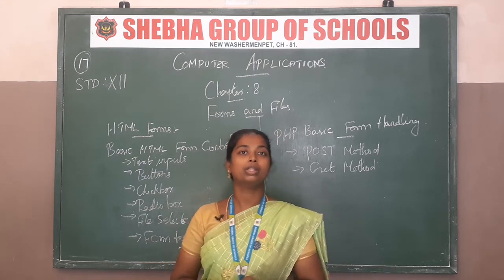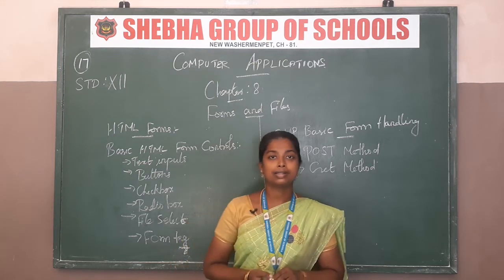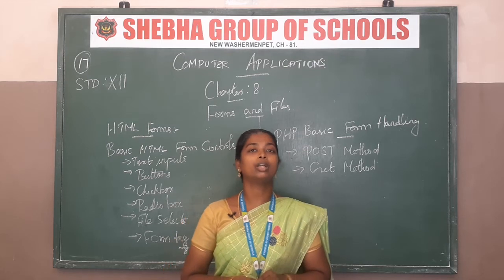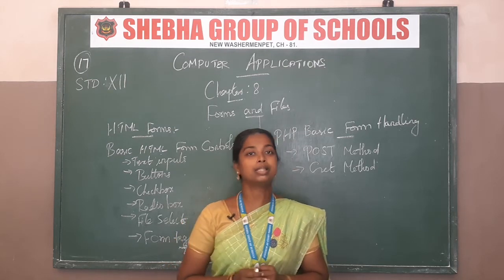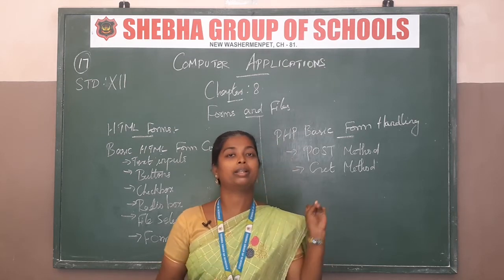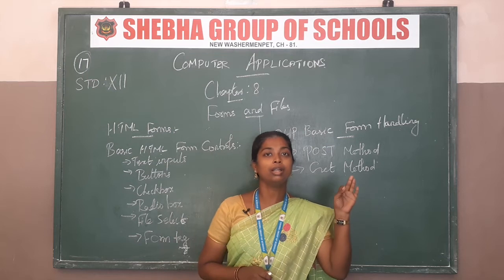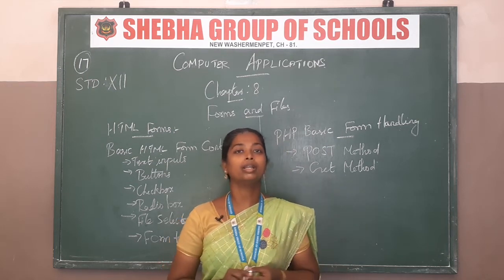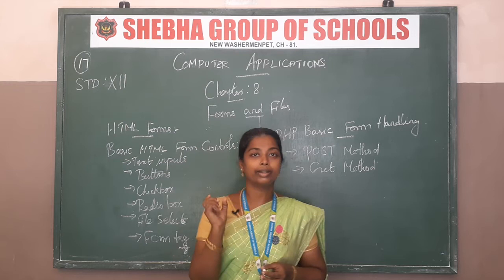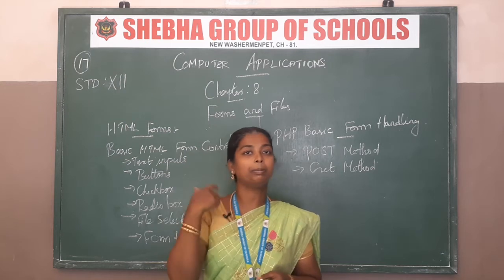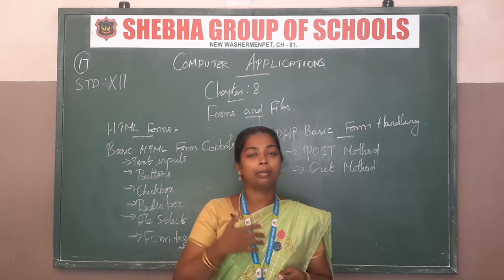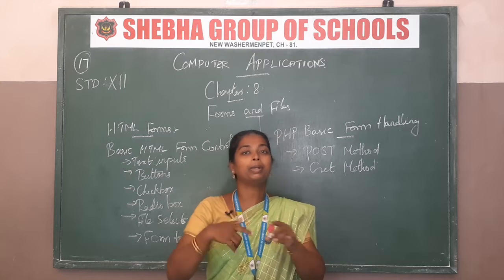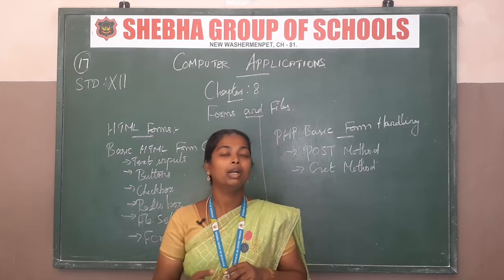Previous class is Chapter 7: Looping Structure. There are 4 types of looping structure: for loop, for-each, while, and do-while loop. If looping is needed, one is for conditions, and one is for repeat — one or more times repeating the looping.